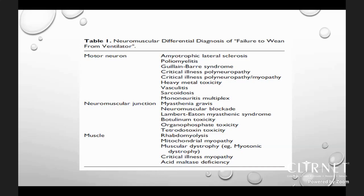When the neuromuscular junction is affected, consider myasthenia gravis, neuromuscular blockade, Lambert-Eaton myasthenic syndrome, botulinum toxicity, organophosphate toxicity, and tetrodotoxin toxicity. At the muscle level, differentials include rhabdomyolysis, mitochondrial myopathy, muscular dystrophy, critical illness myopathy, and acid maltase deficiency. This is more of a diagnosis of exclusion.